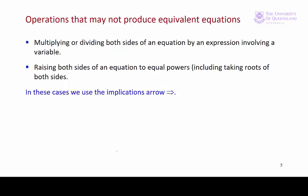There are other operations that we carry out quite often that don't produce equivalent operations. In these cases, the first equation implies the second equation. So if we multiply or divide both sides of an equation by an expression involving a variable, or if we raise both sides of an equation to an equal power, then the first equation implies the second equation. So we use an implications arrow. It may not be the case that the second equation has the same solutions as the first equation. We need to test those.